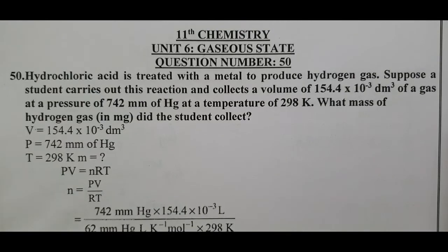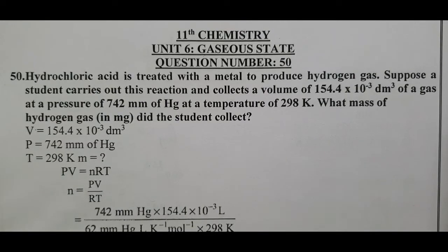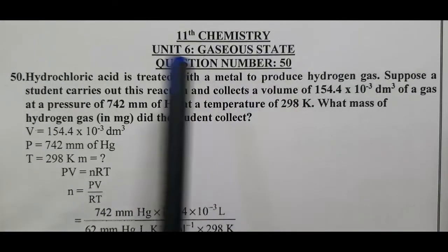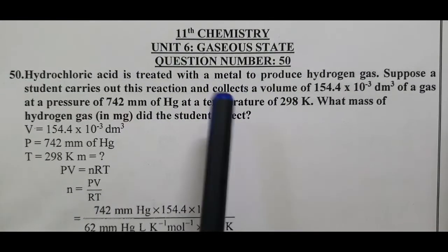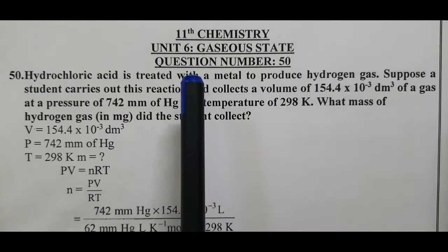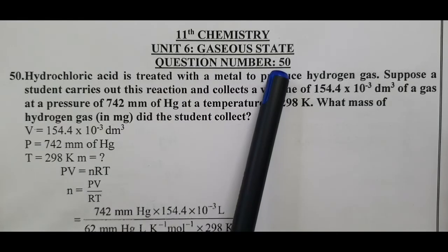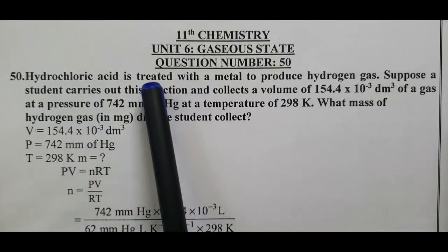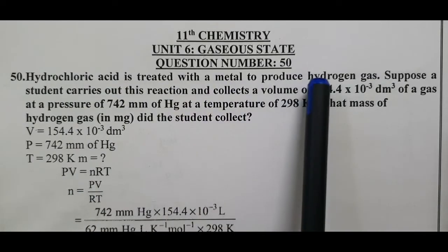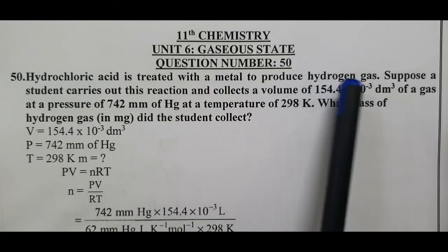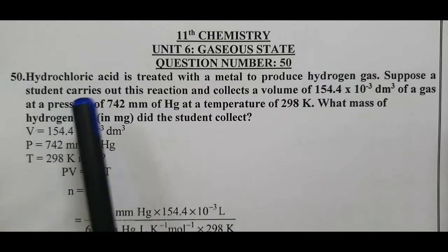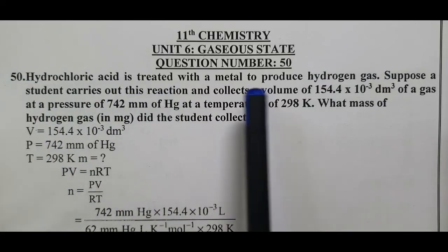Peace be upon you and your family. 11th chemistry, unit 6, gaseous state, lesson book problem number 50. Hydrochloric acid is treated with a metal to produce hydrogen gas. Suppose a student carries out this reaction.